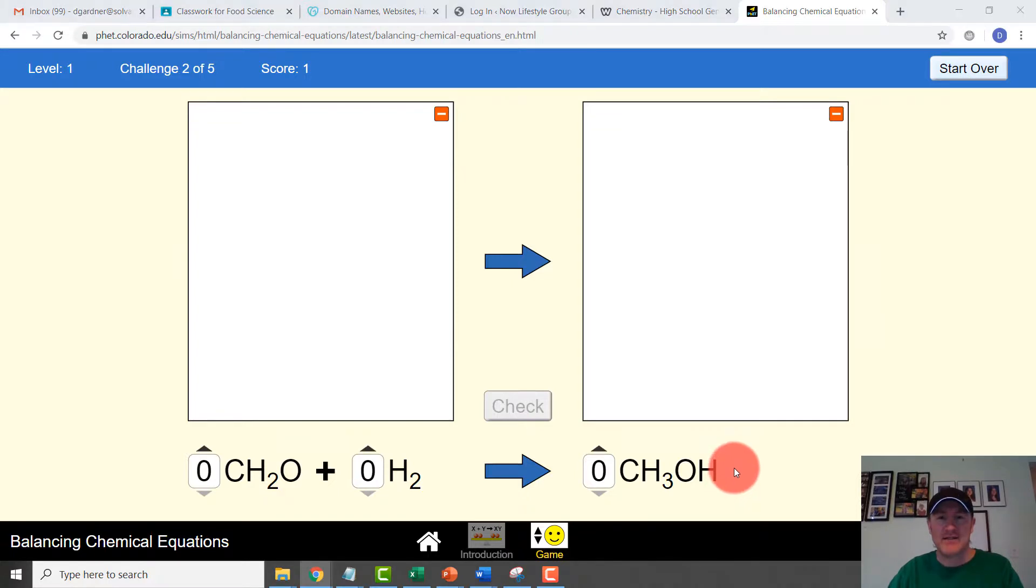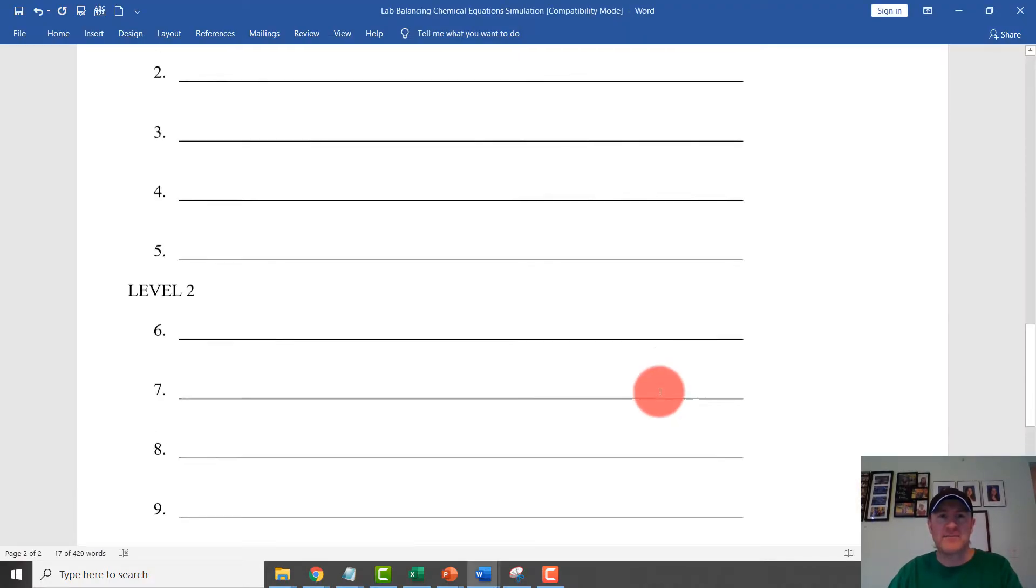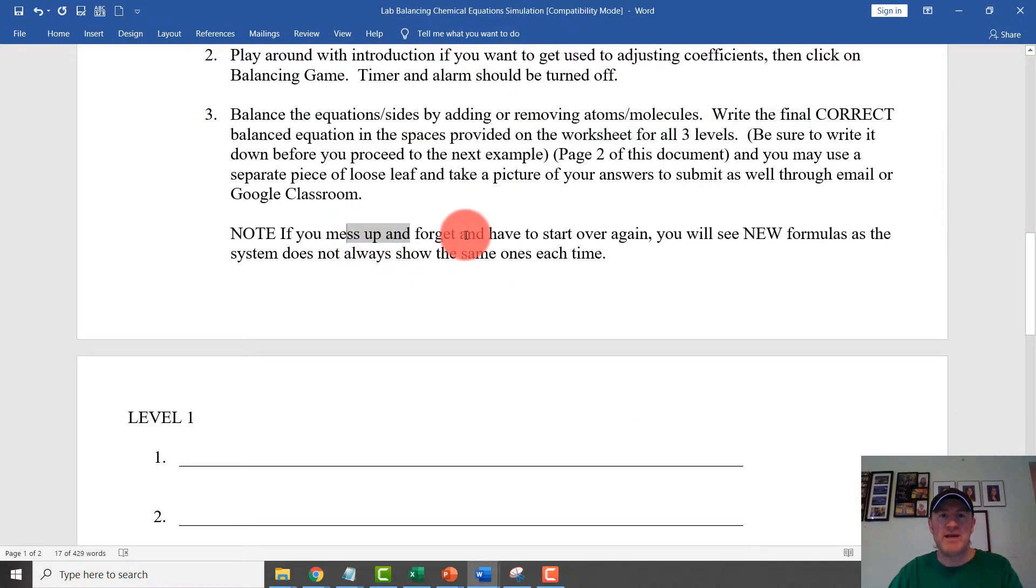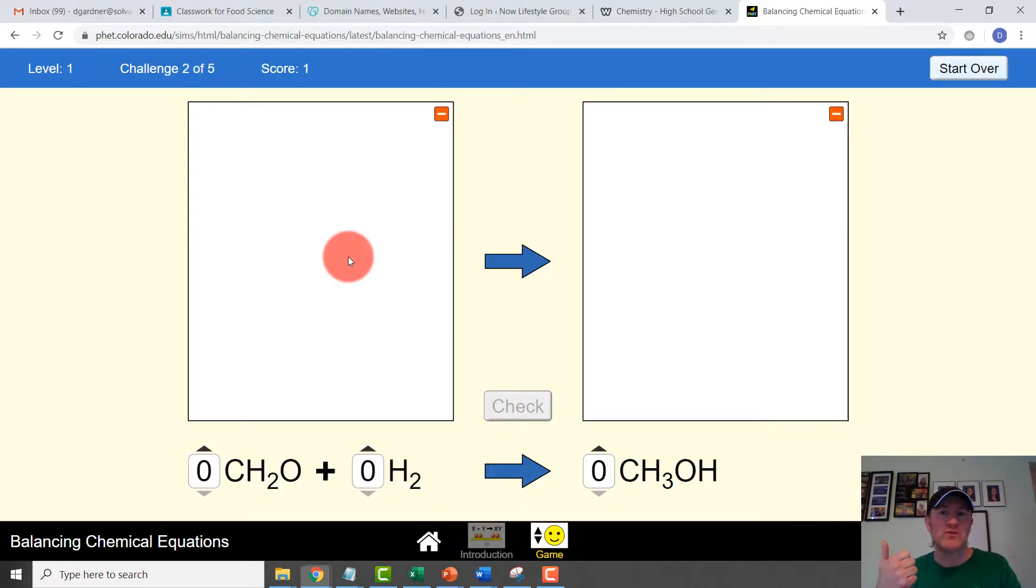Once you are done, you go to the next one and you start over. Now, here's the other hint. Notice if you mess up and forget and have to start over again, you will see new formulas. This system rotates questions. It will not give you the same exact question next time or if you try to have someone else do it. So here's the thing. If you are working with someone and helping someone else, I should not necessarily see the same answers from other students doing this in class because it rotates different questions. If I see you all have the same answers, I know you've cheated on this.